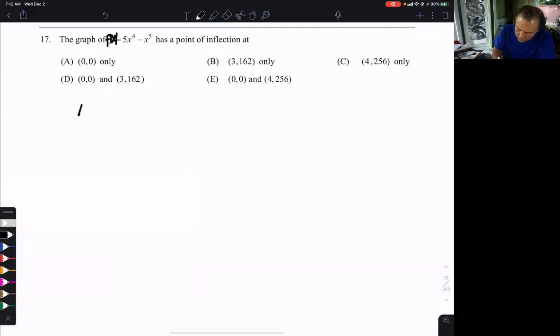We'll call this f of x. So f prime of x is going to be 20x cubed minus 5x to the fourth. Then we take the derivative again, 60x squared minus 20x cubed.